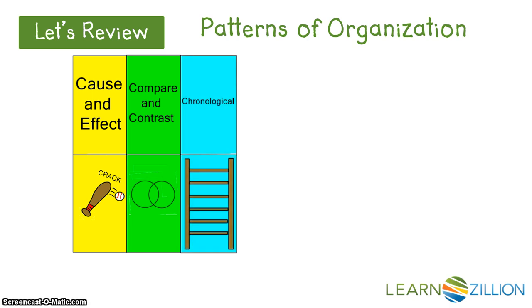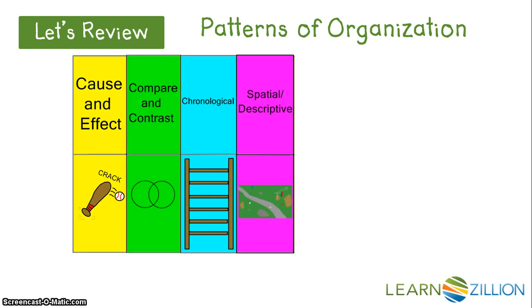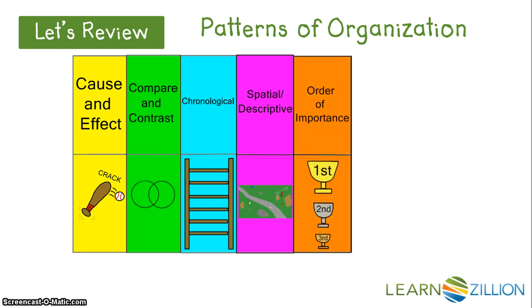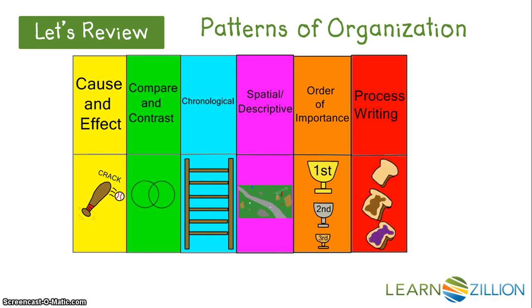Chronological order is another pattern — this is when a story is told in the same order the events occur. With spatial or descriptive writing, the author takes the reader from one spot to the next as if physically looking at something. Another pattern is order of importance, where the writer prioritizes ideas according to a hierarchy of value, from most important to least or vice versa. Process writing instructs the reader to do something in a specific order — it's basically a set of directions or a manual.